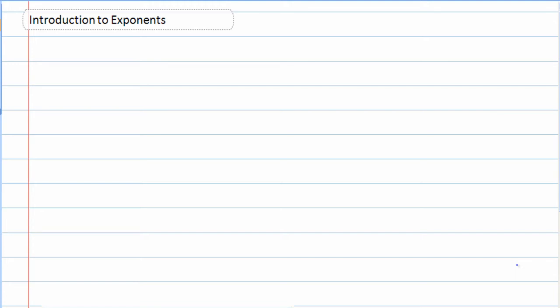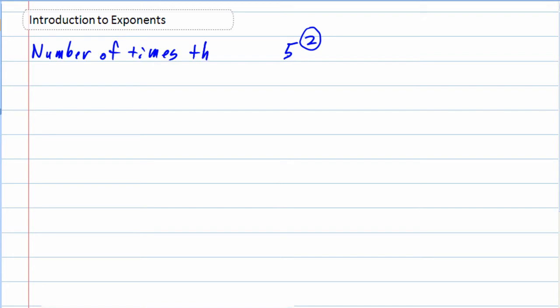Alright, we're now going to take a look at an introduction to exponents. An exponent is written as the small number, the superscript, that is written above and to the right of a number. An exponent is just trying to tell us something — it's trying to tell us what to do. It's trying to tell us the number of times that it is being used as a factor.